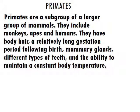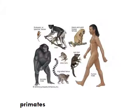Primates are a subgroup of a larger group of mammals. They include monkeys, apes, and humans. They have body hair, a relatively long gestation period — meaning pregnancy time — mammary glands, different types of teeth, and the ability to maintain a constant body temperature. This is why we are in the mammals category.